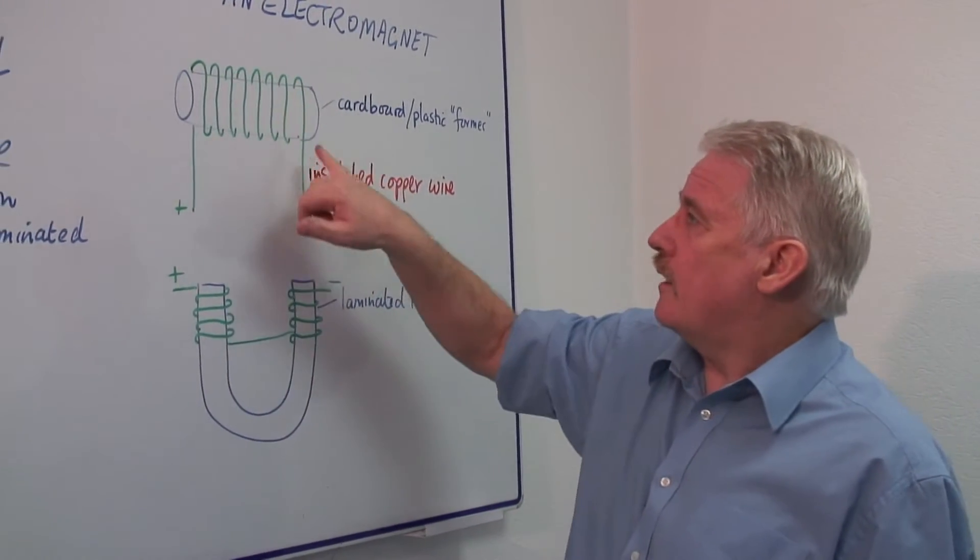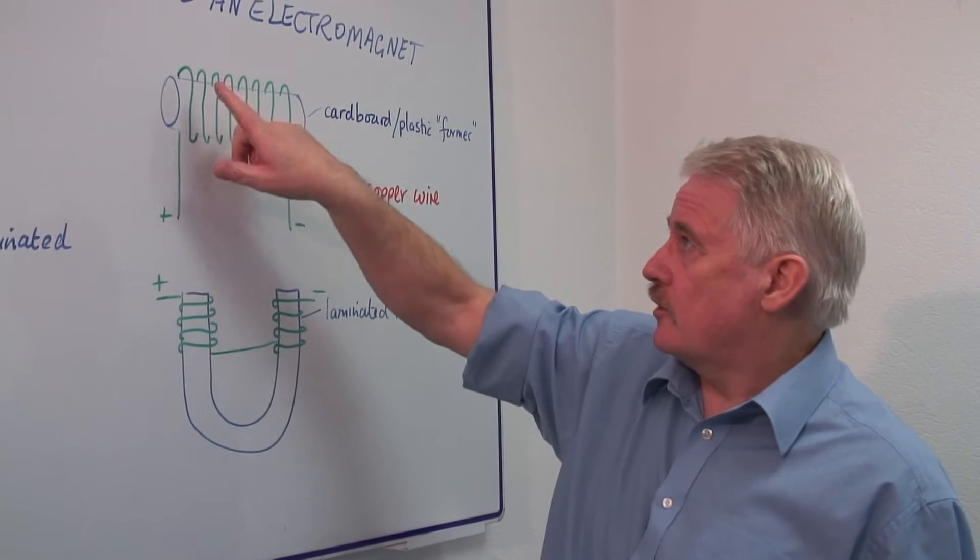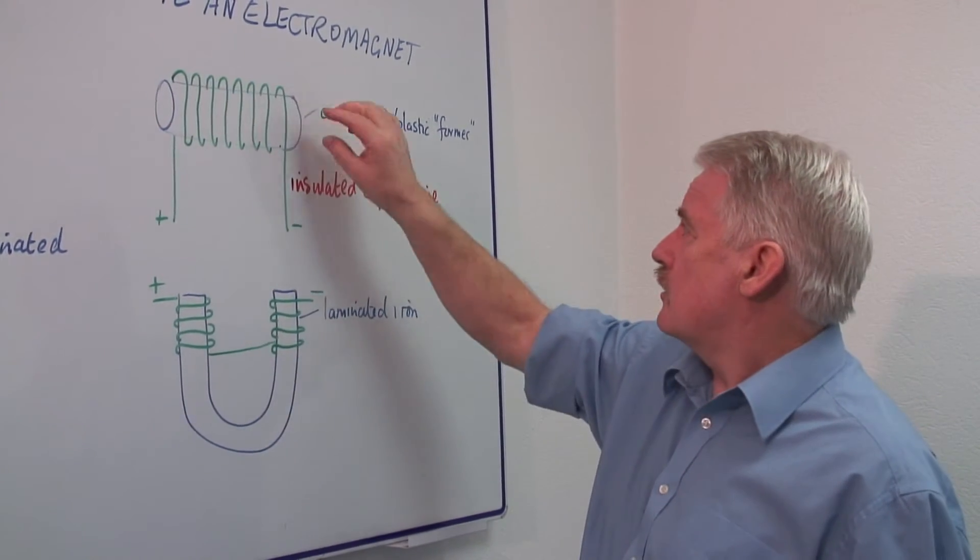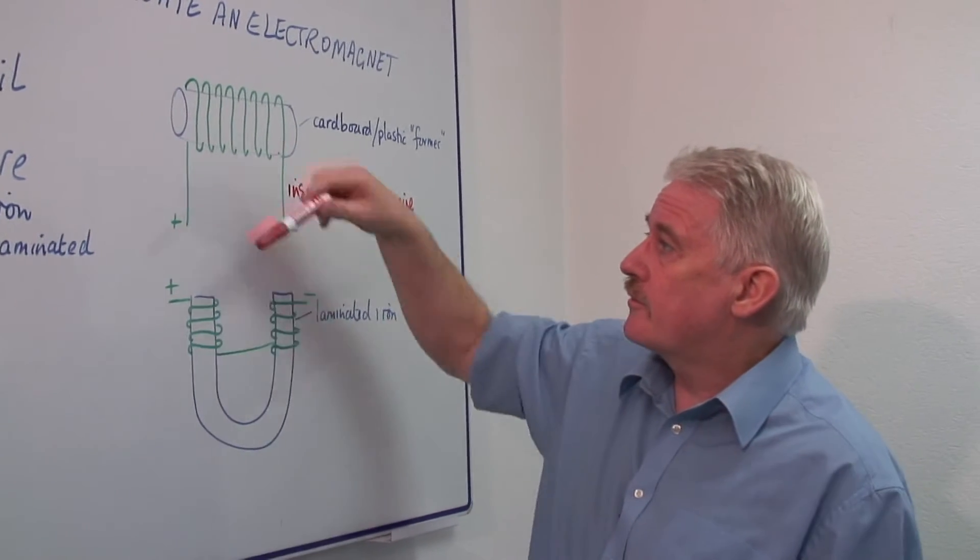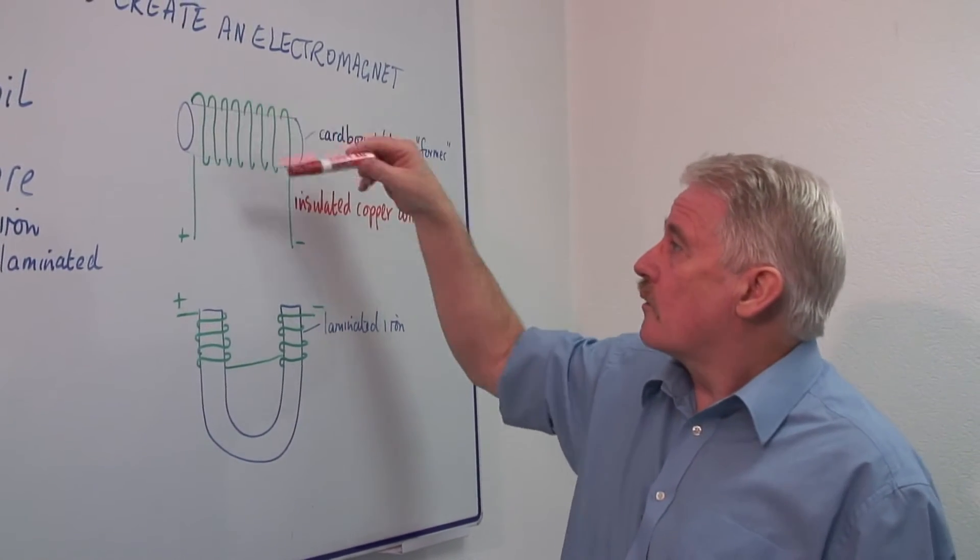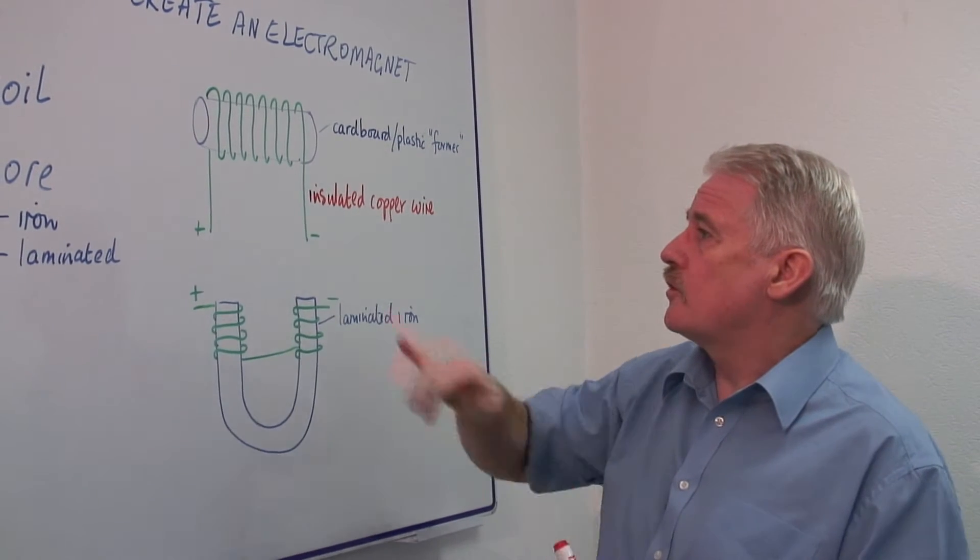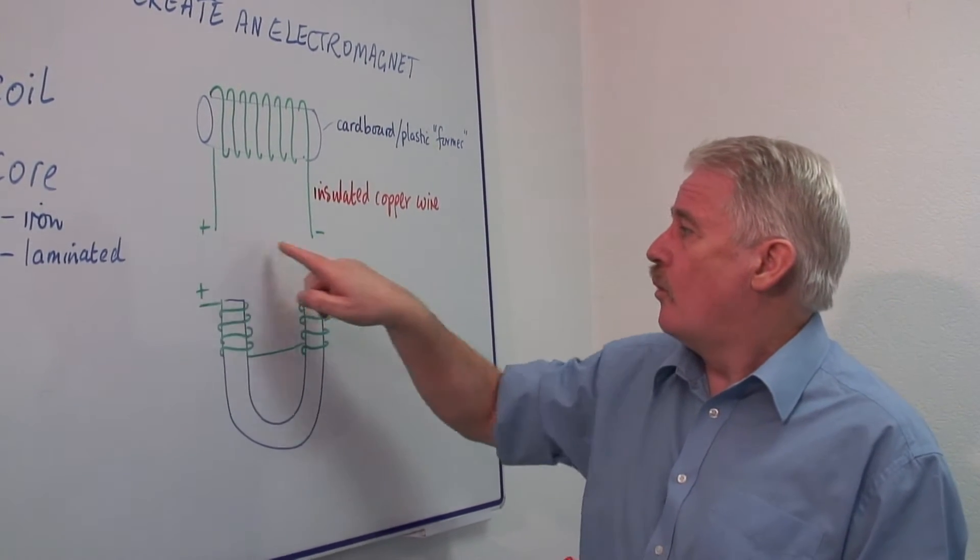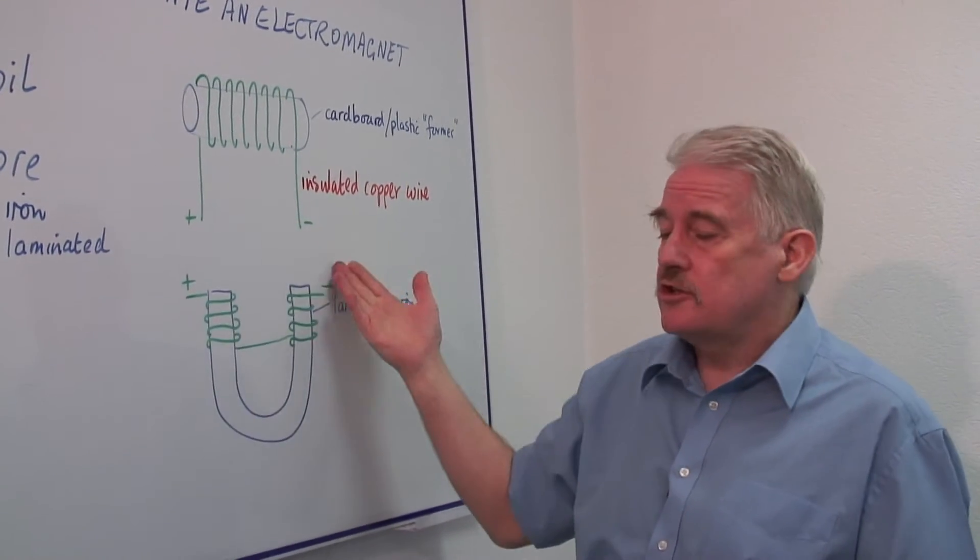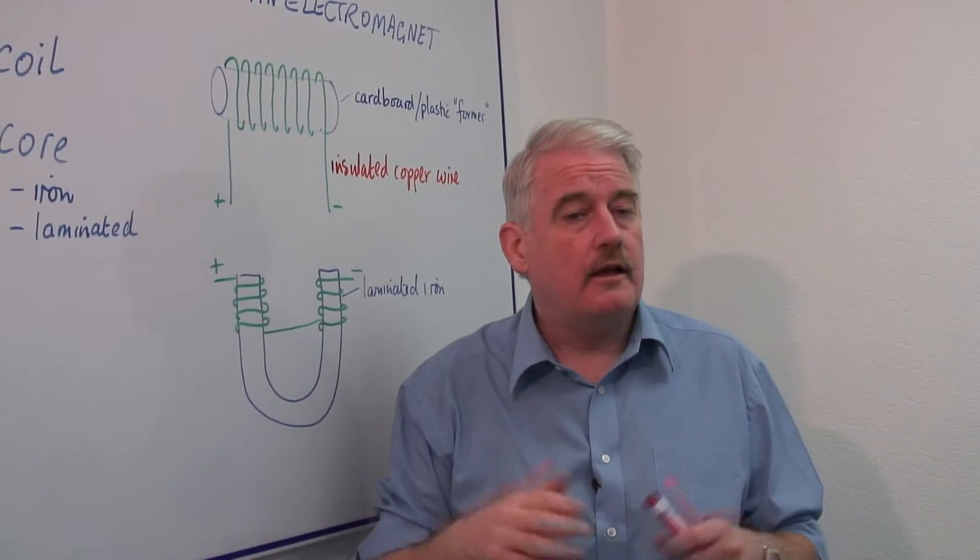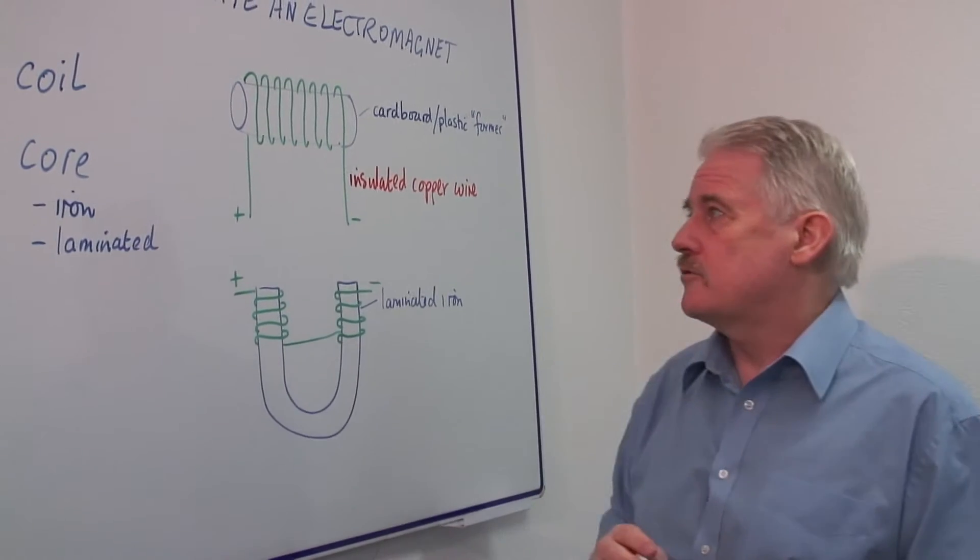So you have a piece of copper wire, you need a cardboard tube of some kind, and you simply wrap the copper wire around the cardboard tube until you've got a coil like this, with one end at each end, bare the ends, attach it to a battery, and you have an electromagnet.